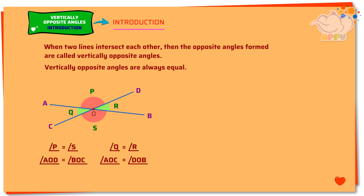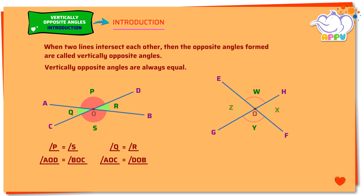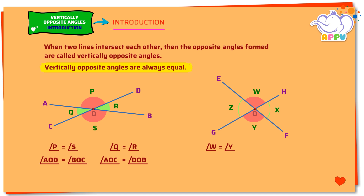In this figure, two straight lines EF and GH intersect at a point O. Four angles are found at O. Here angle W and angle Y are one pair of vertically opposite angles. Angle W equals angle Y. This is the same as angle EOH equals angle FOG.